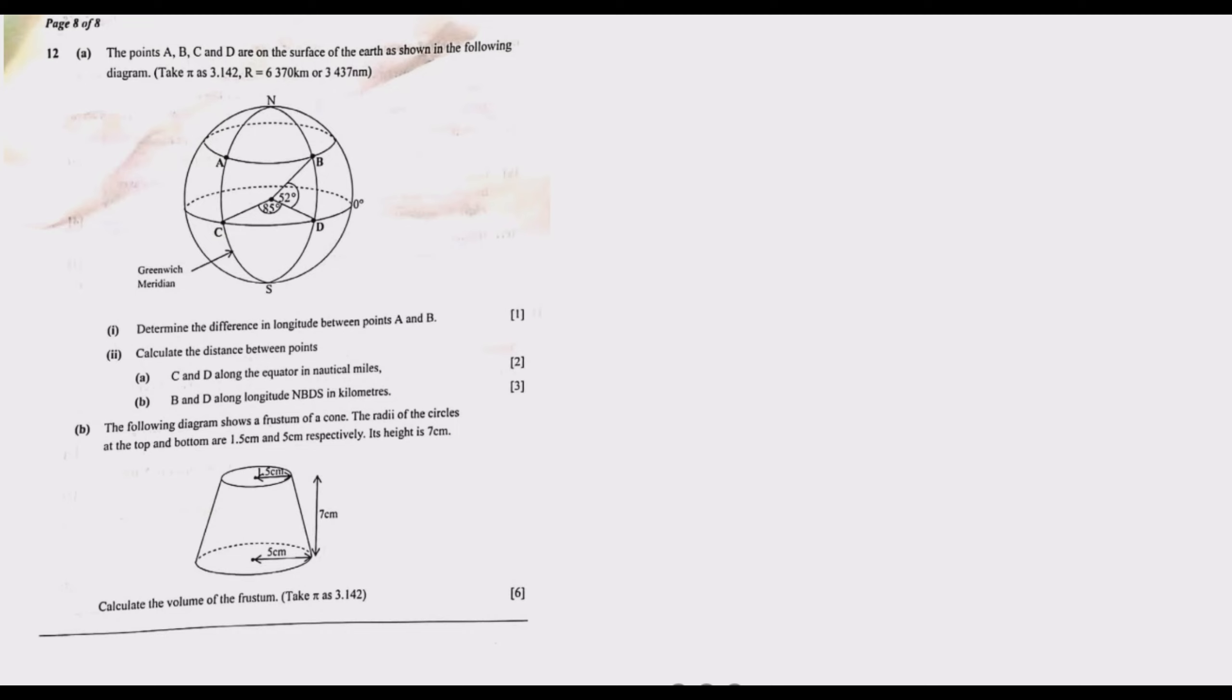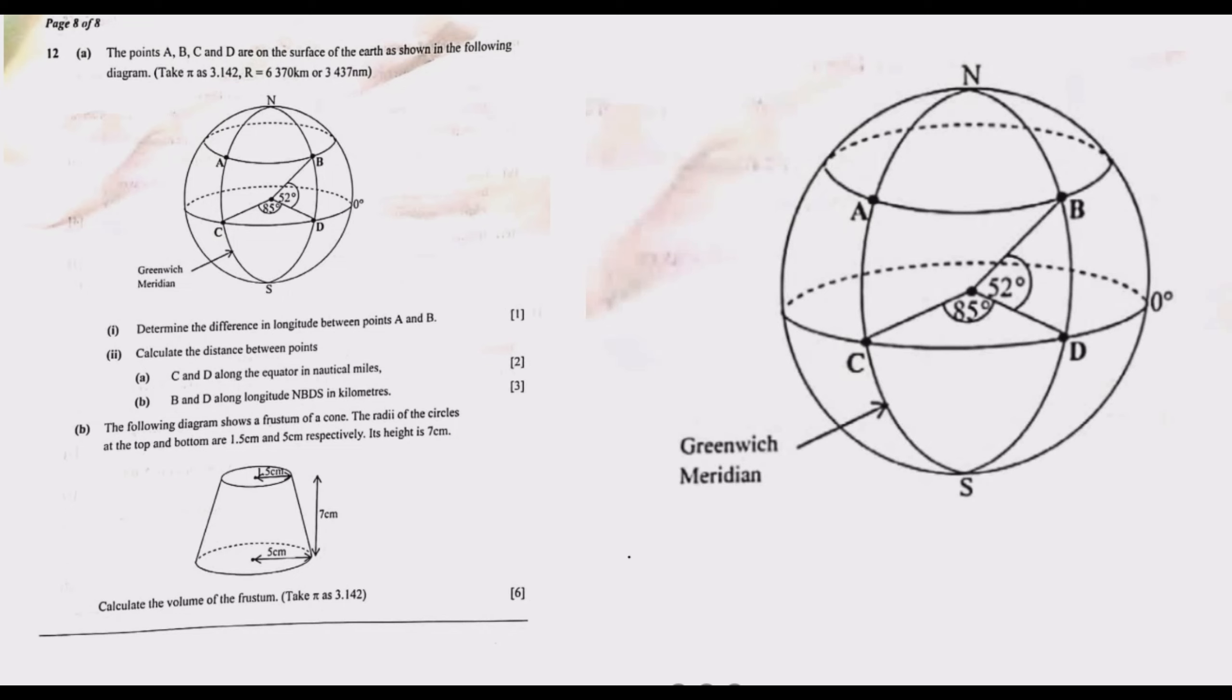Roman numeral 1a determines the difference in longitude between points A and B. So let us zoom in so that we're able to see clearly. Point A and C lie on the same longitude, which is the Greenwich meridian. Similarly point B and D lie on the same longitude. A and B lie on the same latitude, and C and D lie on the equator.